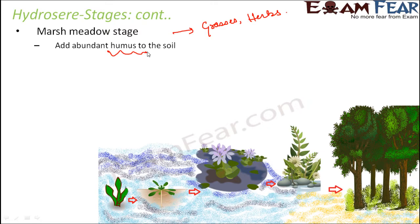Looking at the overall progression: we started with the plankton stage — tiny autotrophic organisms underwater. Then the submerged stage where plants were under water. Then floating-leaf plants on the water surface. Then amphibious plants surviving both on land and water. Now grasses and herbs growing on the soil surface. Gradually the level has risen from completely underwater up to the topmost soil surface.